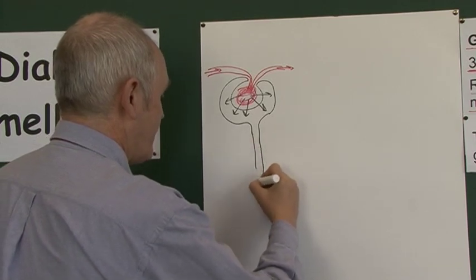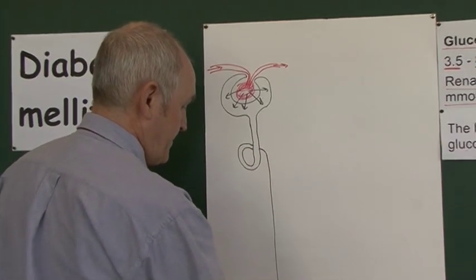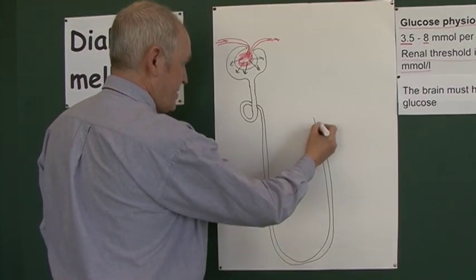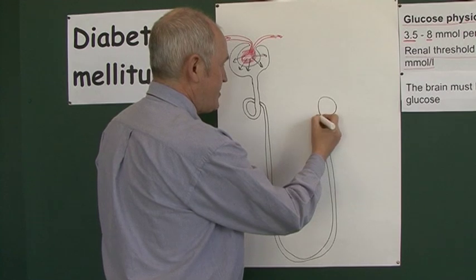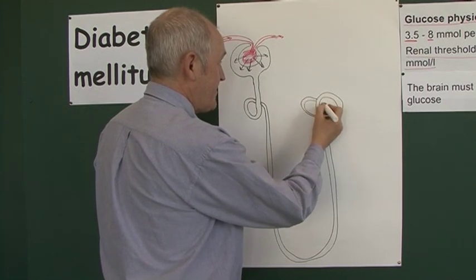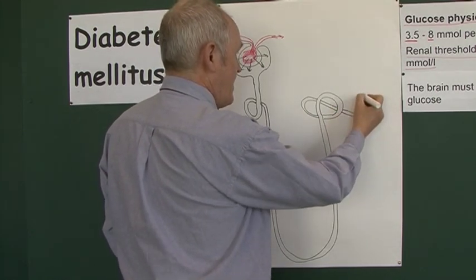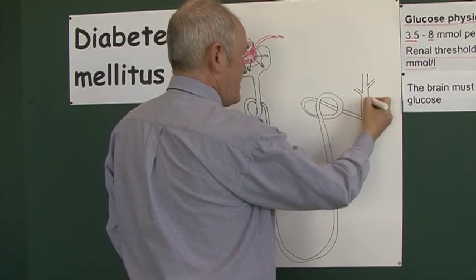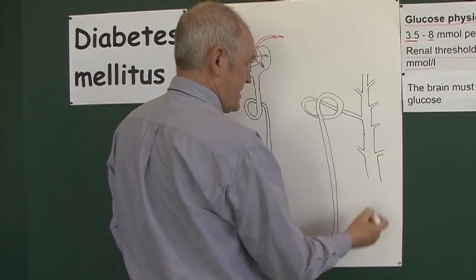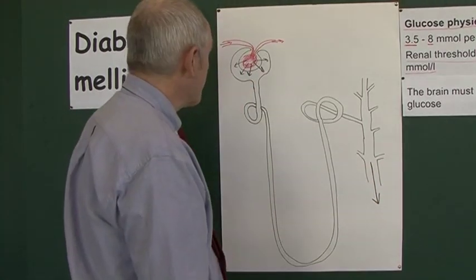The nephron goes down into the first convoluted tubule where it goes round on itself, then there's the long loop of Henle going back up towards the cortex of the kidney, then a second convoluted tubule where the nephron goes round on itself again to increase the length. Then it drains into a collecting duct, and many other nephrons also drain into the same collecting duct, and eventually the urine passes into the calyces and the pelvis of the kidney.